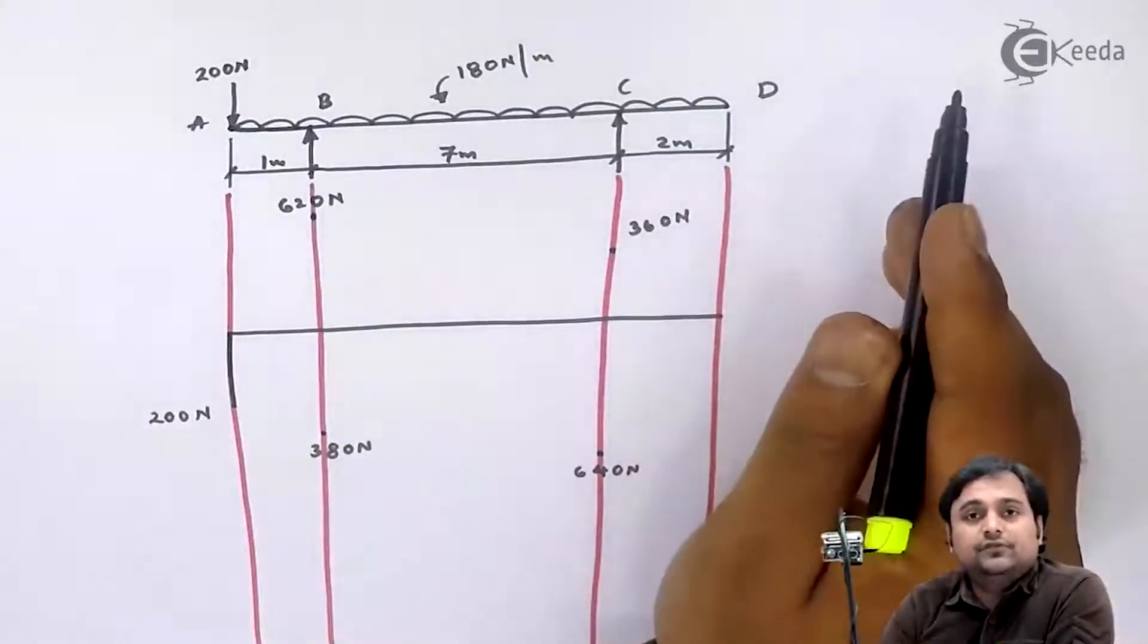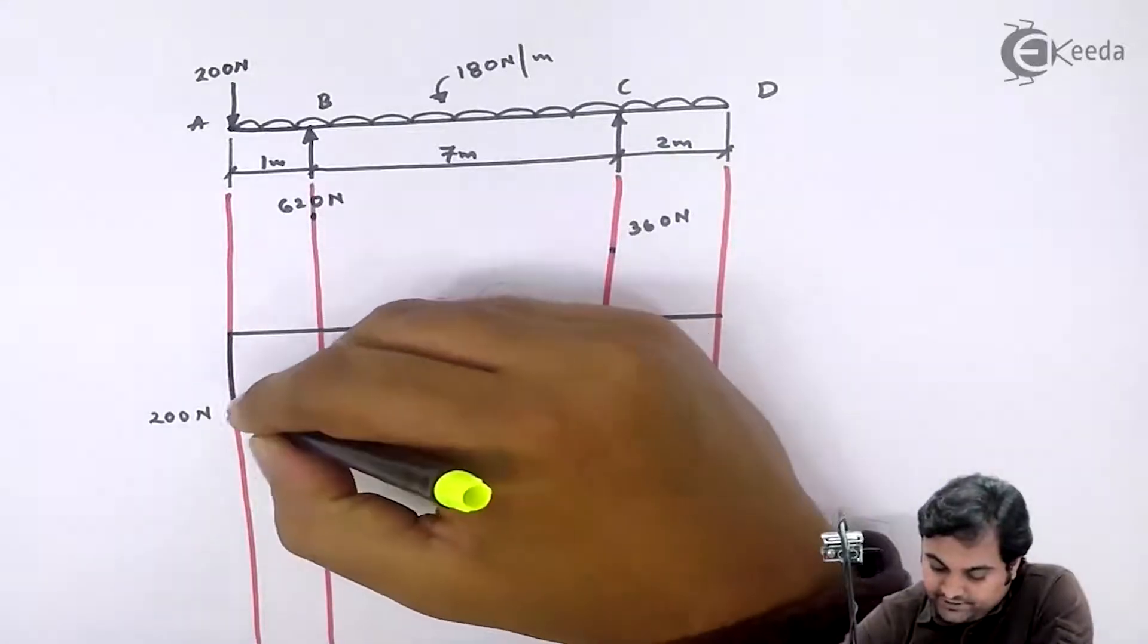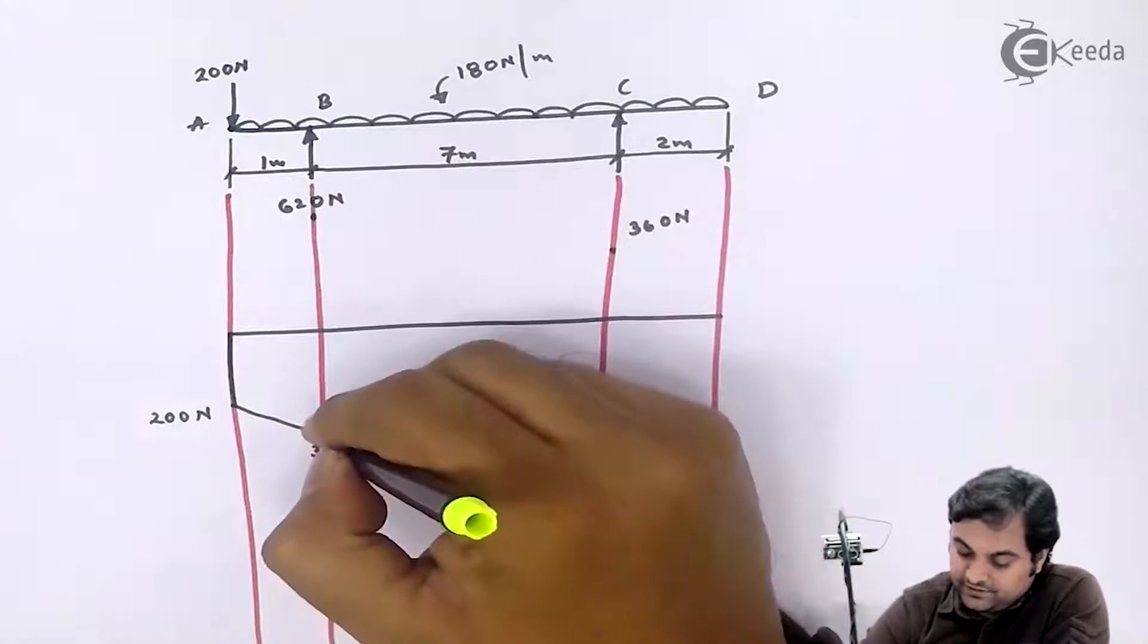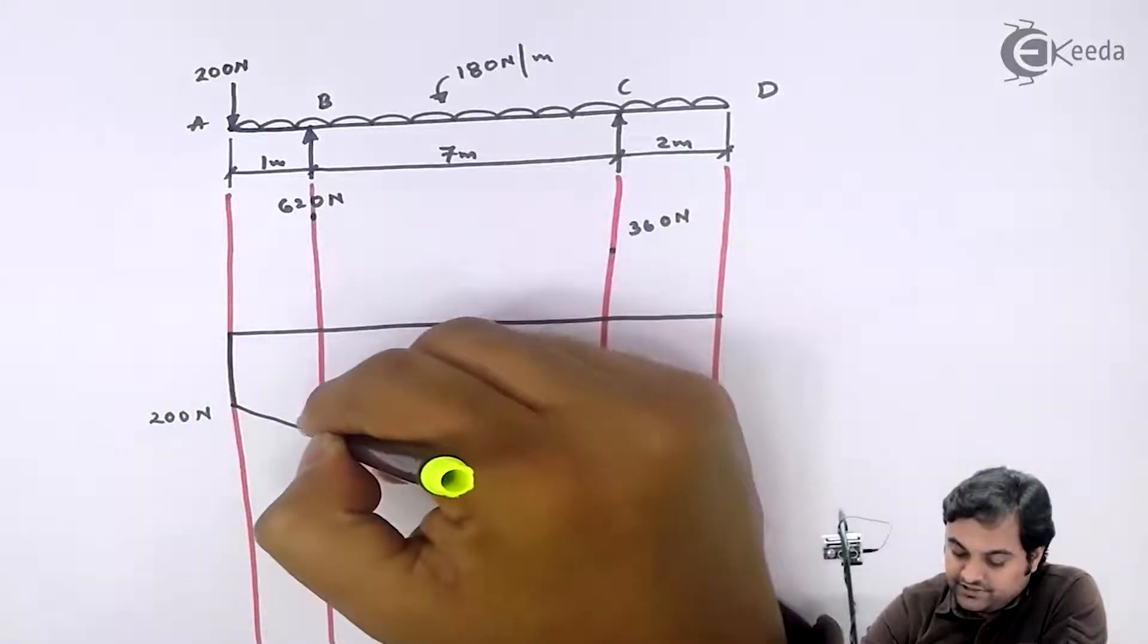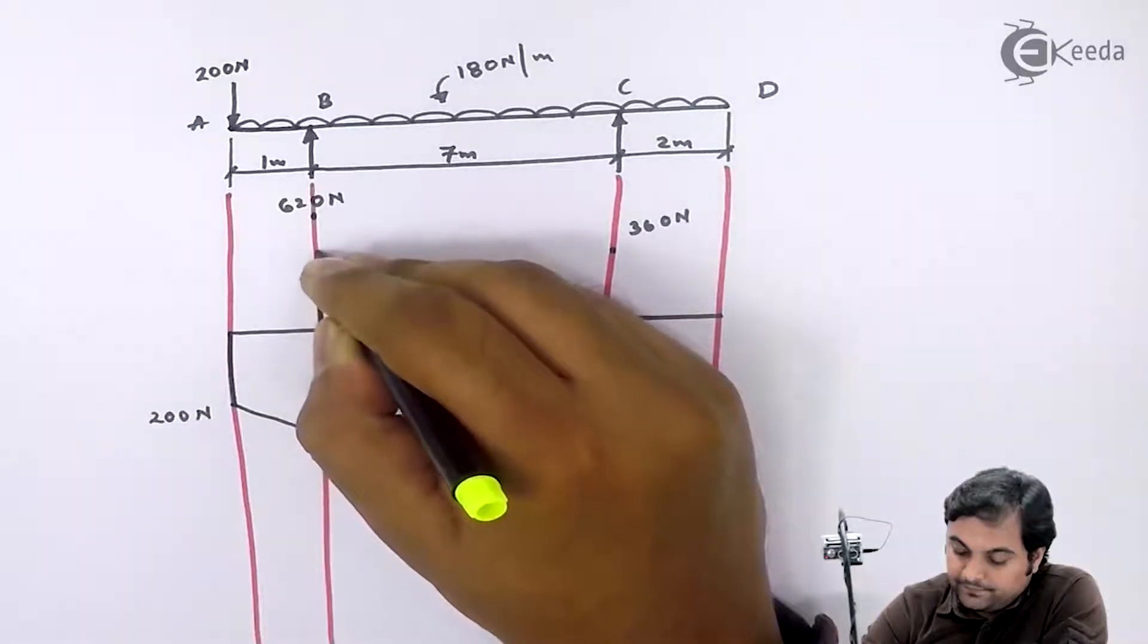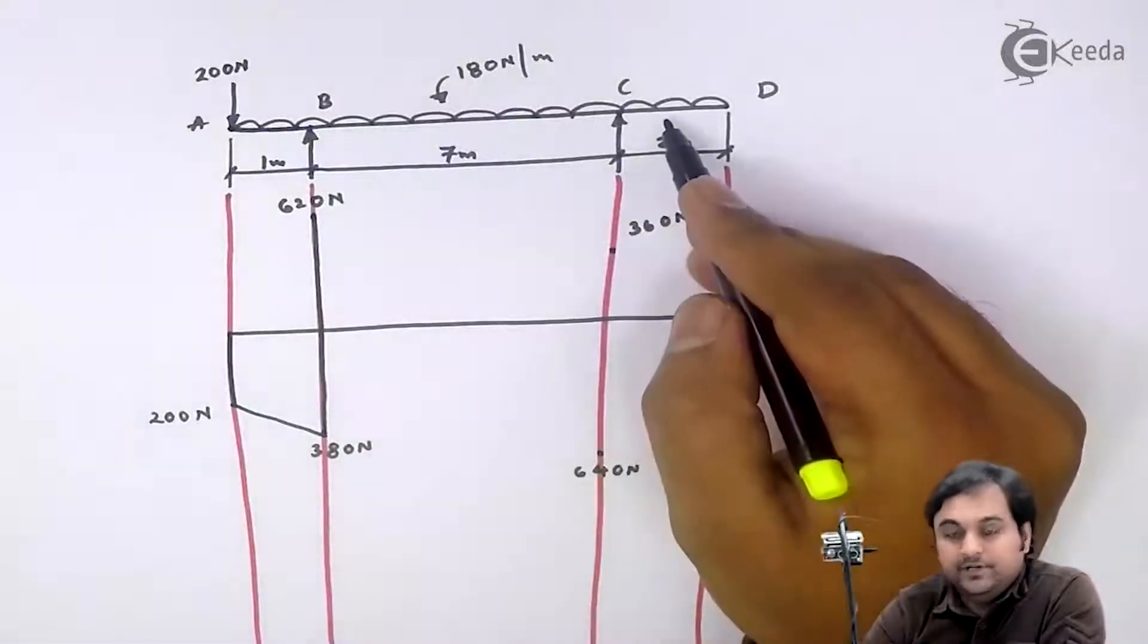So if we have UDL, then shear force is an inclined line. Between 200 and 380 there will be an inclined line. Next, the shear force value increases at point B from 380 to 620, and then again between B to C there is UDL.